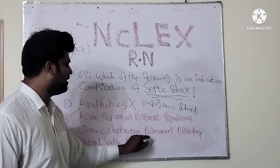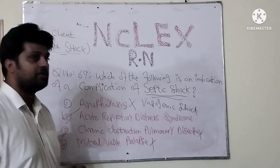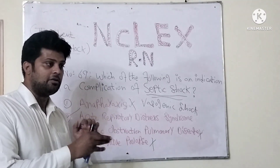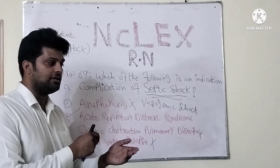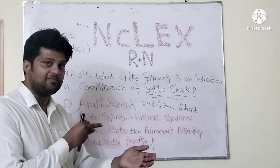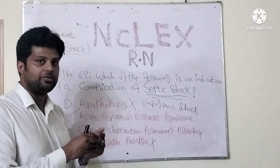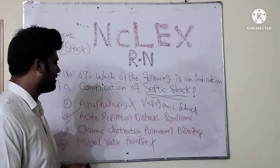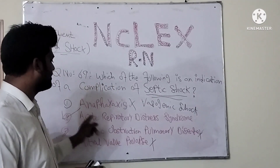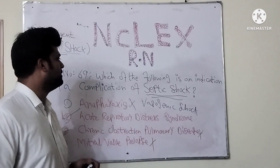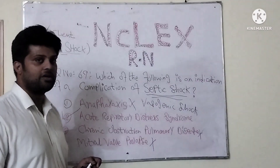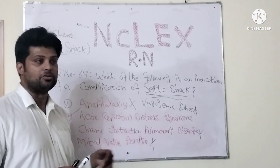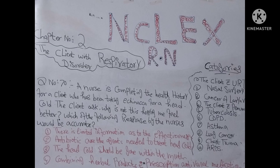Mitral valve prolapse is also a wrong answer because whenever mitral valve prolapse occurs, the mitral valve stays pushed back to its surface. So this is not a right answer. The right answer is acute respiratory distress syndrome. In the next chapter, I will write this in detail — a link is available in detail.